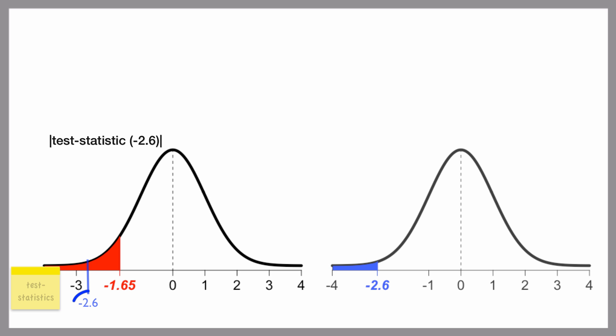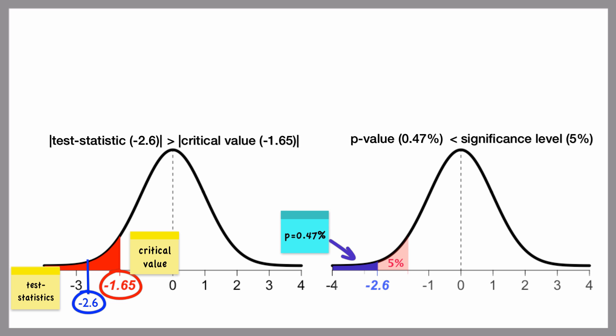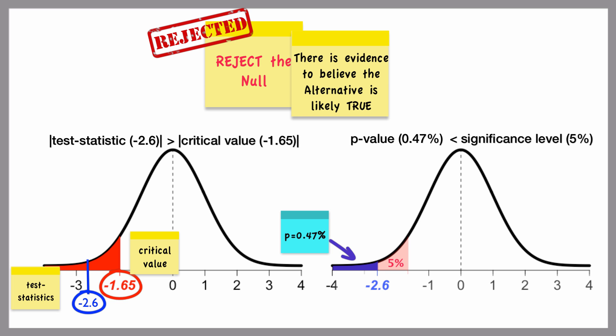We can see that the test statistic of negative 2.6 is larger than the critical value in absolute value and that the p-value of 0.47% is smaller than the significance level. We will reject the null hypothesis and conclude that we have evidence to believe the alternative hypothesis is likely true, that Kian's IQ is likely less than 130.